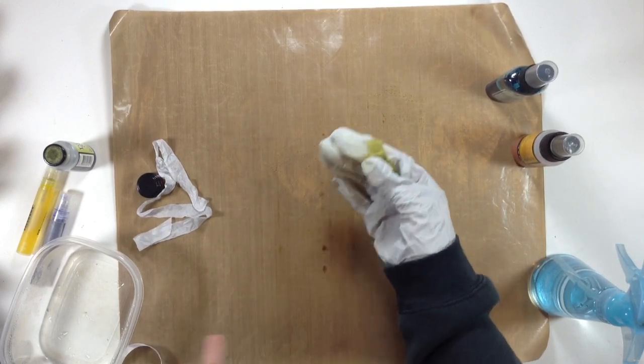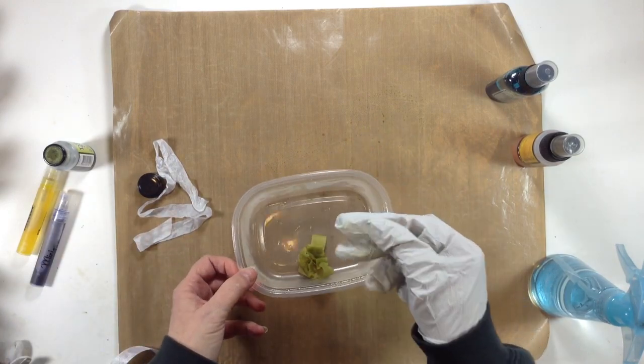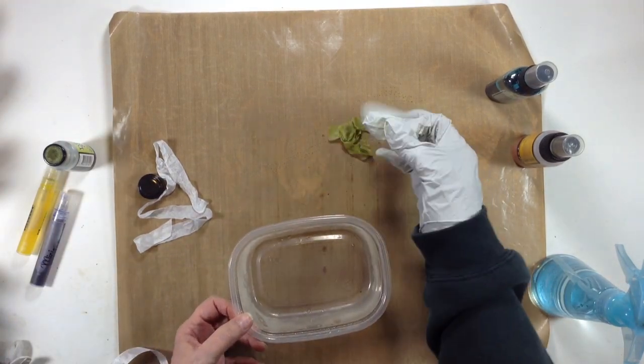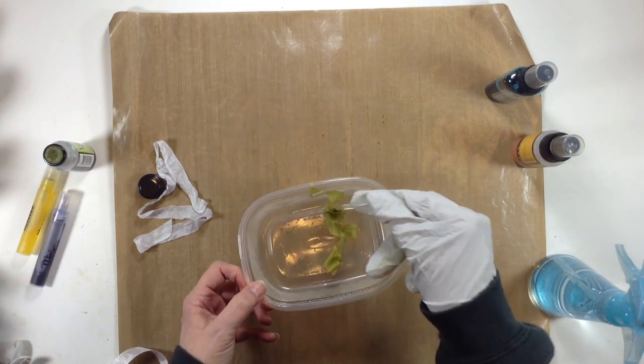That's what it's going to look like. Then you're going to go ahead and just take your heat tool, or you can let it dry naturally, but I like to scrunch mine up so it gets crinkly. Take your heat tool and go ahead and just dry it really quick.